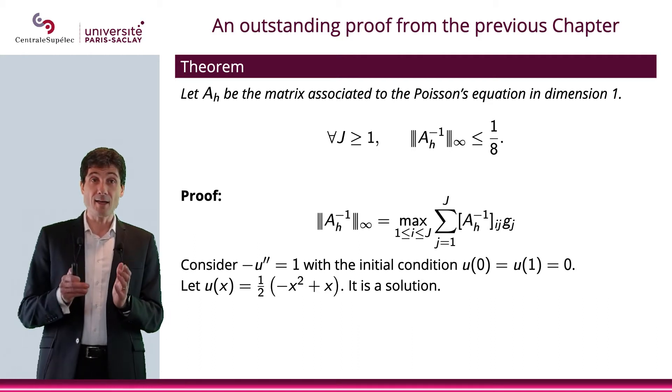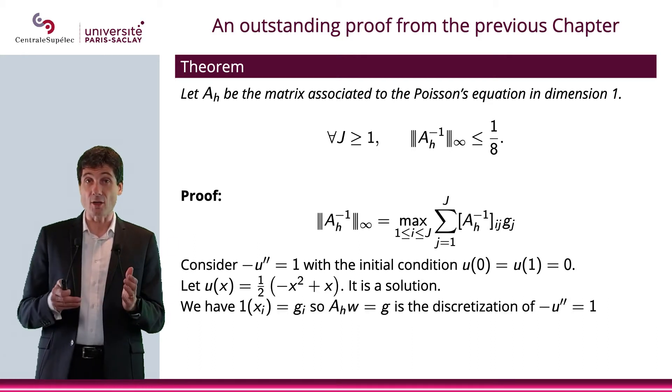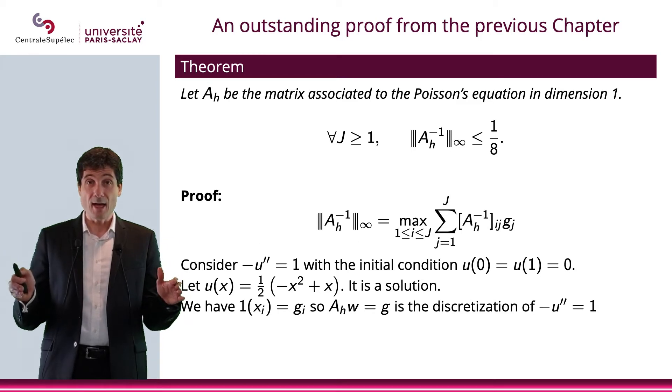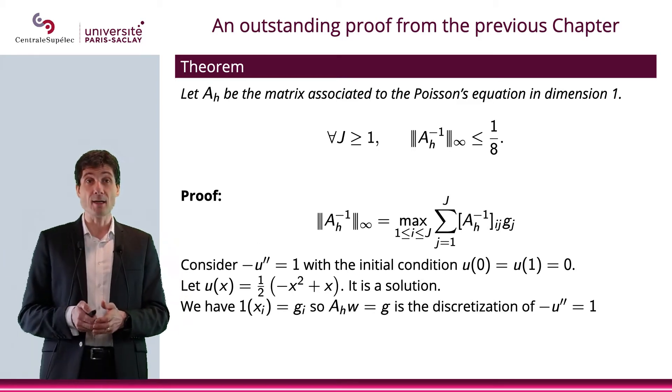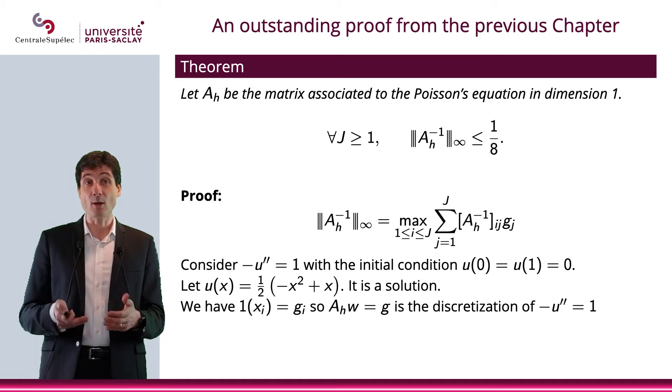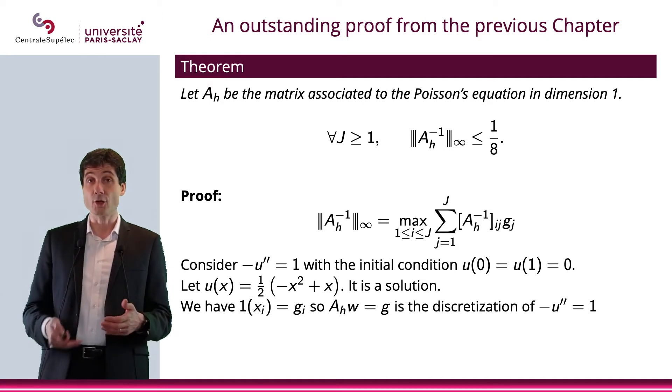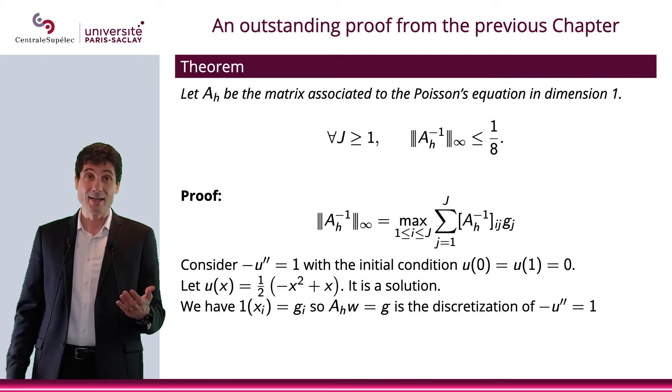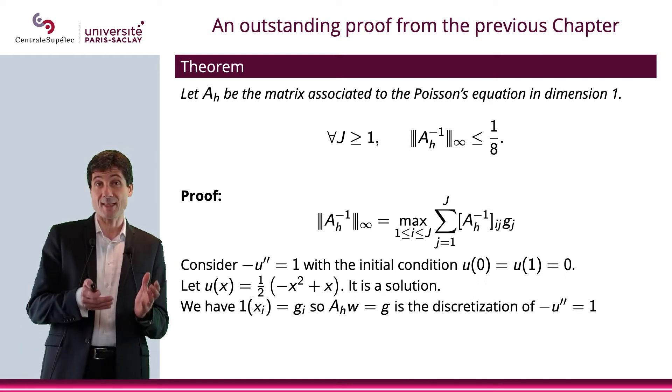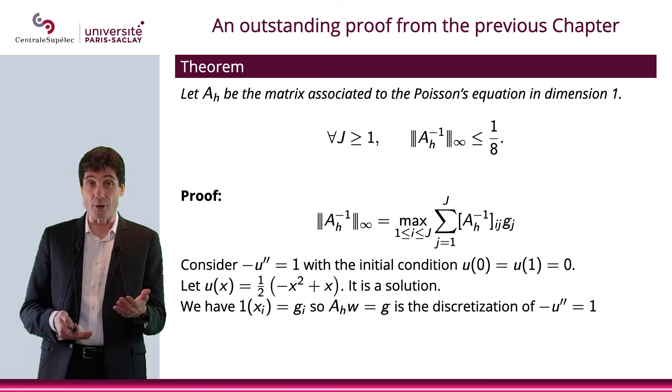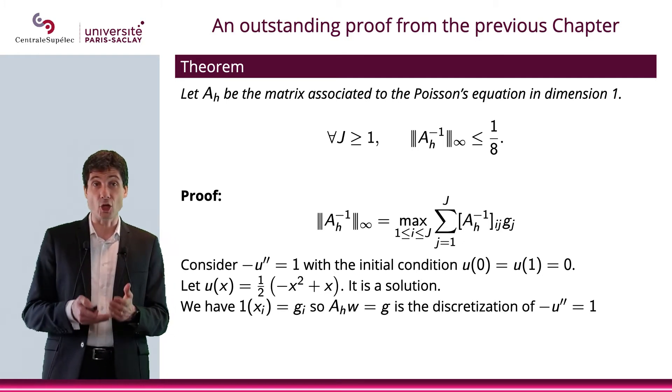Now, this being said, if I look at the function, which is always equal to one, at any point x_i of the grid that I considered last week, then what I will have is that one of x_i is equal to g_i. So what we have is that the matrix A_H applied to w will be g. That is the discretization of minus u second equals one.